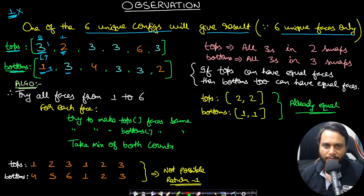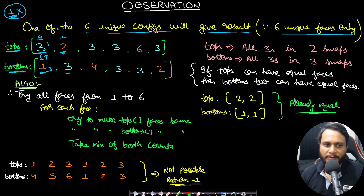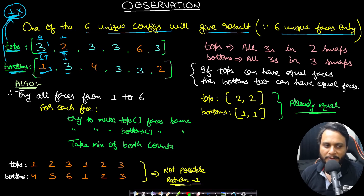Since neither tops[1] nor bottoms[1] equals one, making all tops equal to one is impossible — swapping two and three won't make one. Crucially, if you can't make tops equal to a face value, you can't make bottoms equal to that same face value either — because if both corresponding items at an index are not equal to the target face, no swap can fix it. So we skip this face entirely and move on.